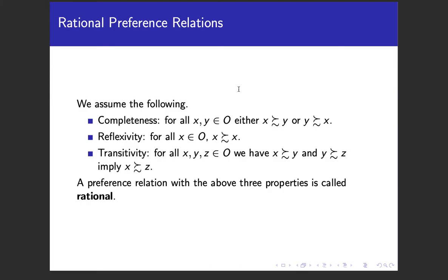Reflexivity says that every x is weakly preferred to x, which is kind of trivially true. Transitivity says that for any three elements x, y, and z in O, if x is weakly preferred to y and y is weakly preferred to z, then x is weakly preferred to z. These properties are analogous to the greater-than-or-equal-to relation on the real numbers. Most textbooks say that if a relation has these three properties, it is rational.